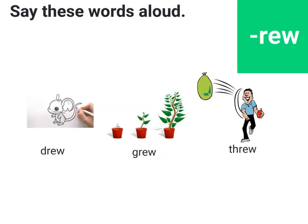Drew, grew, through. All these three words end with '-rew' and they all belong to the '-rew' family. These three words — drew, grew, and threw — are actions which have been done in the past. For example: drew — the boy drew a picture of a mouse. Grew — the plant grew from a small sapling into a big plant. Threw — the man threw a balloon at the tree. Let's say the words one more time: drew, grew, threw.